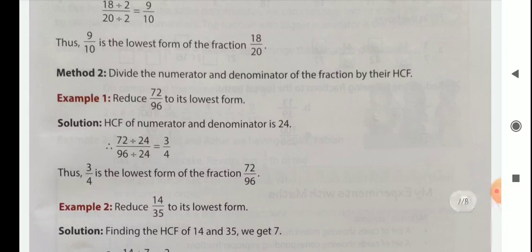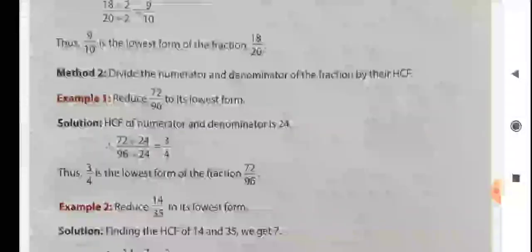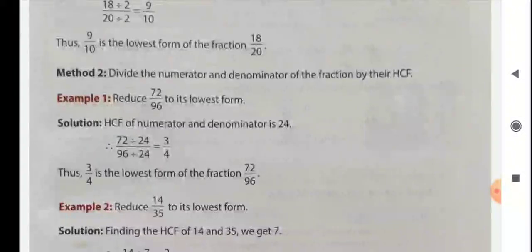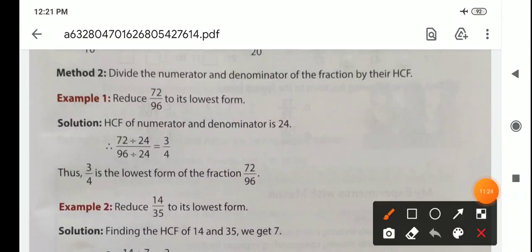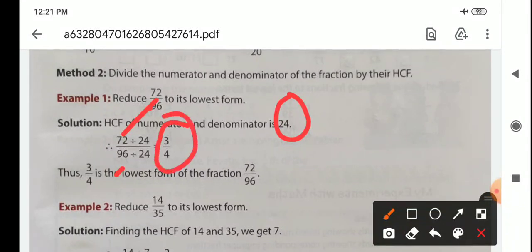Method 2: divide the numerator and denominator of the fraction by the HCF. First find the HCF of the numerator and denominator, which is 24. Then divide both numerator and denominator by 24, and you get 3 by 4, which is the lowest form of the fraction 72 by 96.